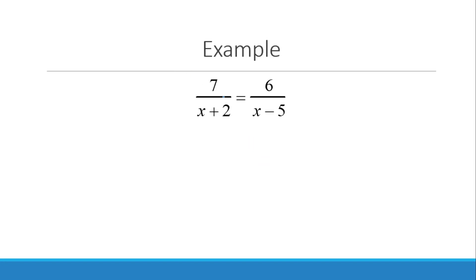So how does this work when you have a rational expression? Again, it only works when you have just one fraction equal to another fraction. This is 6 times x plus 2 is equal to 7 times x minus 5. So again, you multiply diagonally. So this is 6x plus 12 is equal to 7x minus 35.